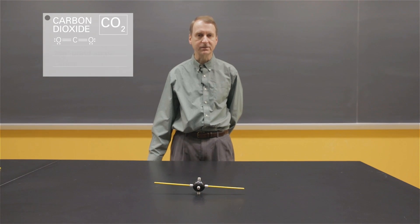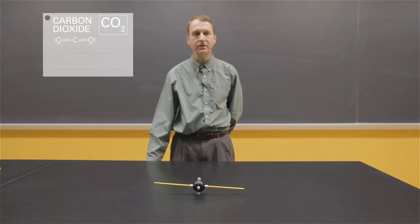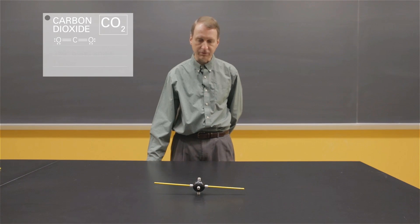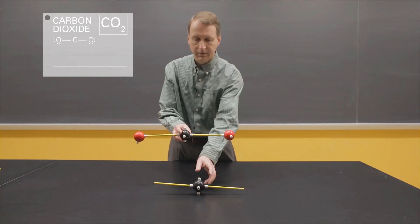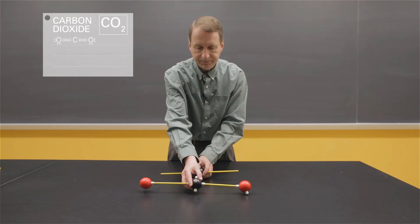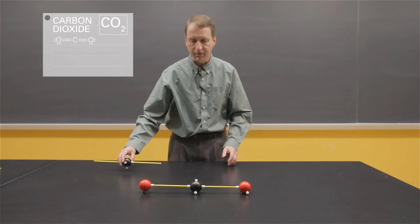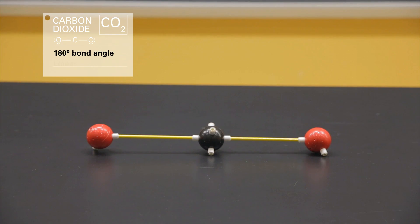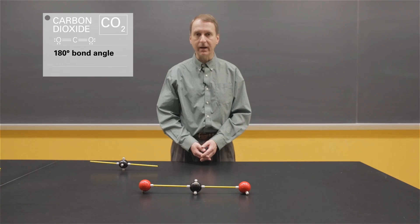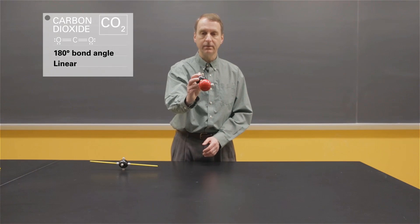First is carbon dioxide. The Lewis structure of carbon dioxide shows two carbon-oxygen double bonds — that would be two electron groups — and the appropriate model is this. Carbon is the black atom in the center and the oxygens are the red atoms on the outside. We have a 180-degree bond angle, and the word I would use to describe this shape is linear. All three atoms are in a line.